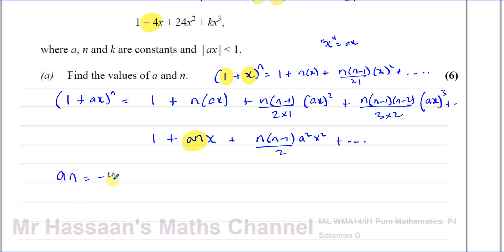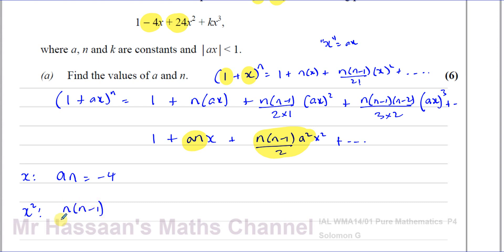So a times n equals negative 4 — that's from comparing the x coefficients. We can also compare the x² coefficients: the x² coefficient in the given expansion is 24, and in our formula expansion it is n(n−1)/2 · a², so n(n−1)/2 · a² = 24.